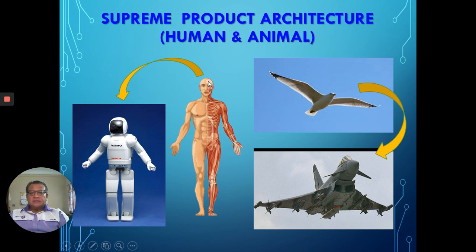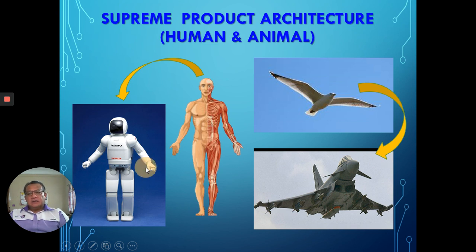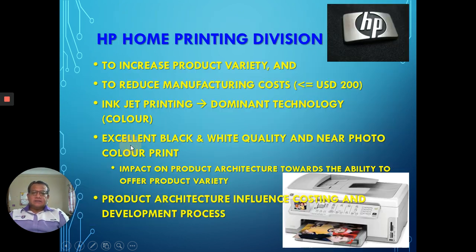You have the whole body, two hands left and right, and Asimo also has two hands and two legs at the bottom. These are God's architecture, and Asimo is the product of human architecture.